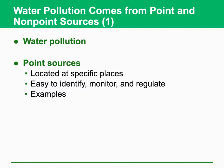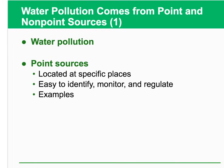As I mentioned, water pollution comes from point sources and non-point sources. Point source means it is located at some specific places, and it is easy to identify, easy to monitor, and easy to regulate. There are a lot of examples. For instance, a wastewater treatment plant is one example of point source pollution.